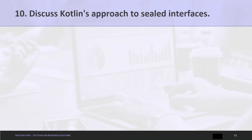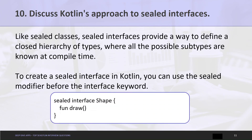Question 10: Discuss Kotlin's approach to sealed interfaces. Like sealed classes, sealed interfaces provide a way to define a closed hierarchy of types, where all possible subtypes are known at compile time. To create a sealed interface in Kotlin, you can use the sealed modifier before the interface keyword.